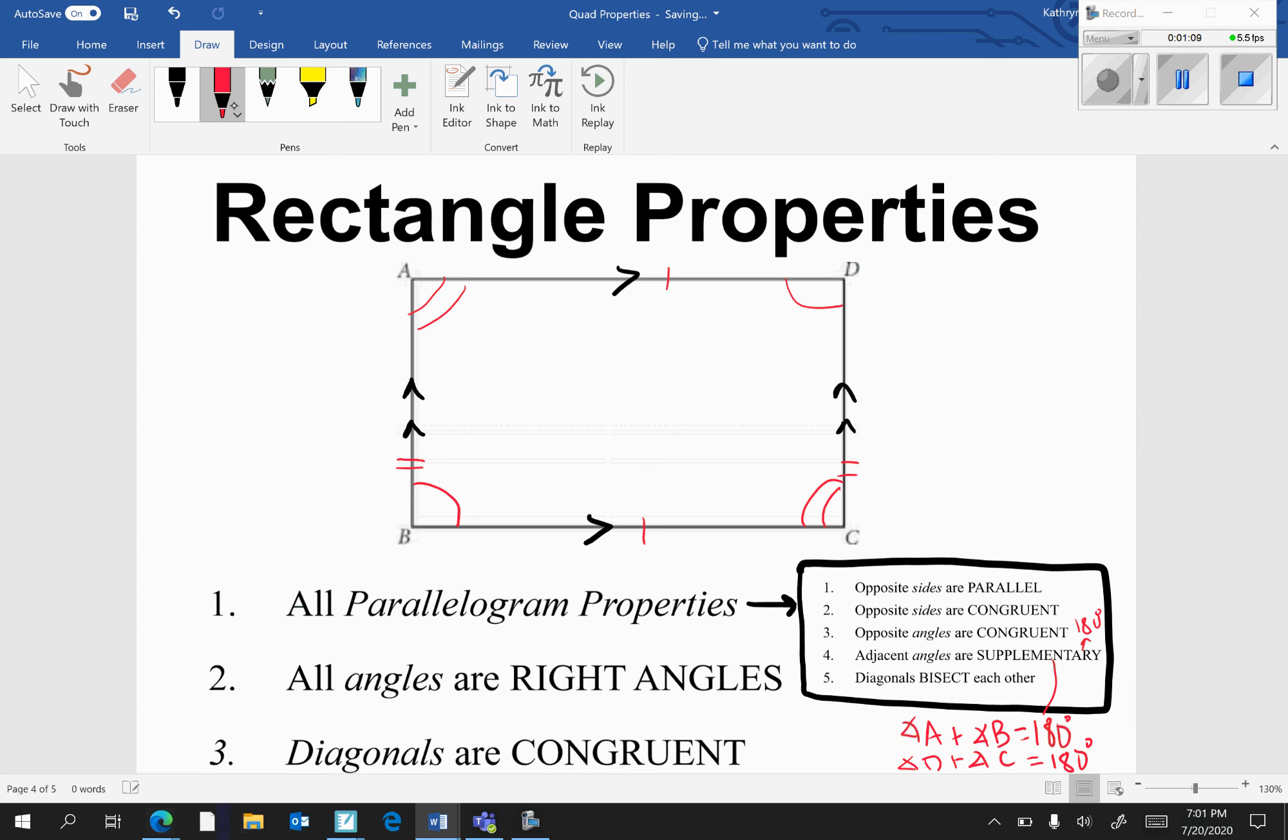The diagonals bisect each other. So if I drew in diagonals, remember bisect means two congruent parts. AE would be congruent to EC, and BE would be congruent to DE.